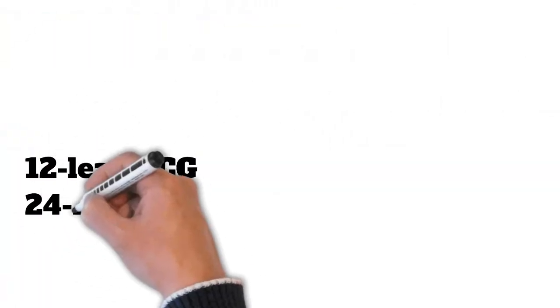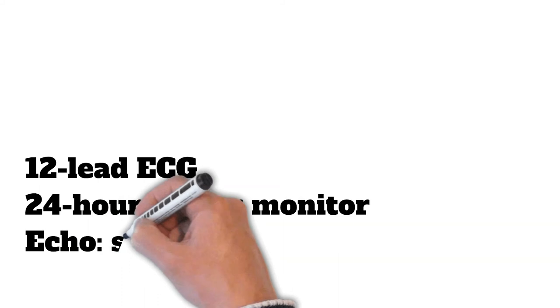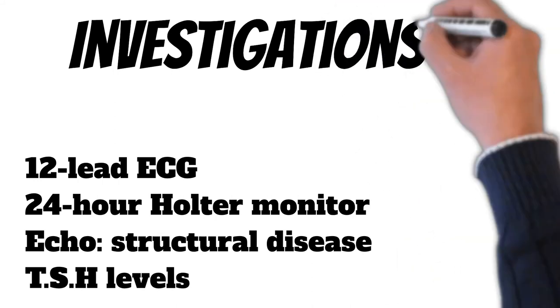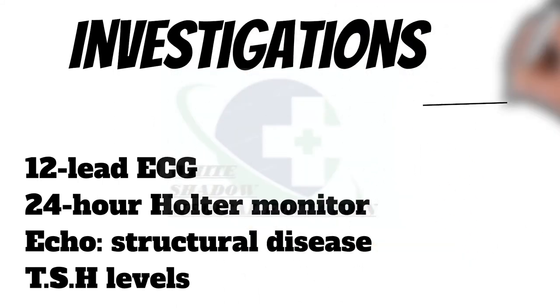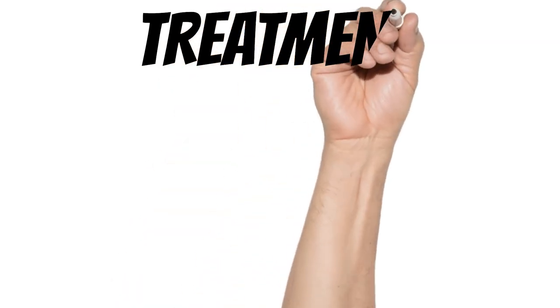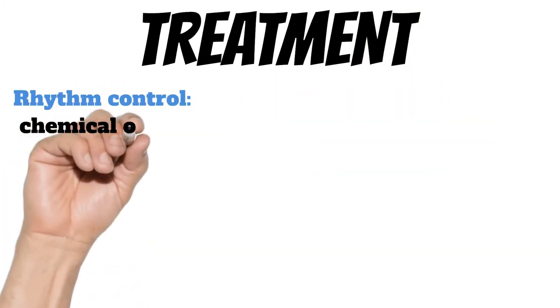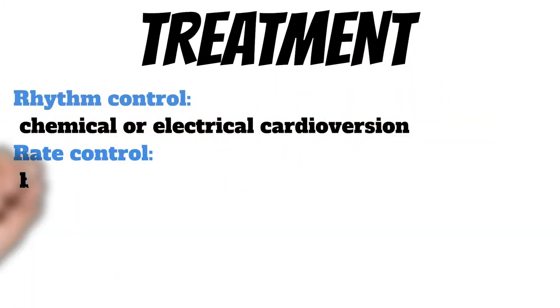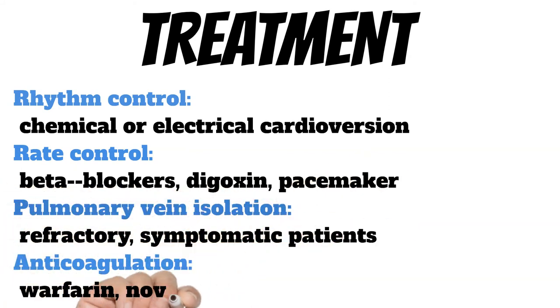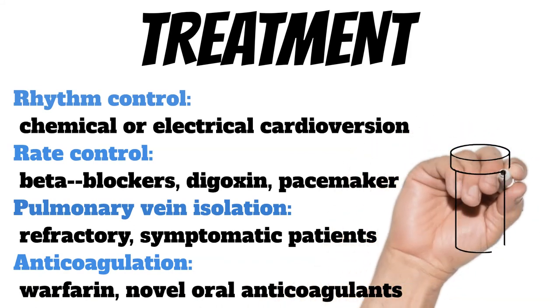Now it's time to tell the patient about the management plan, including investigations and treatment. Regarding investigations, we have options of 12-lead ECG or 24-hour Holter monitor, echocardiogram for structural disease, and TSH levels. Regarding treatment, options for rhythm control include chemical or electrical cardioversion. For rate control, beta blockers, digoxin, and pacemaker are the top options. Pulmonary vein isolation is reserved for refractory symptomatic patients.